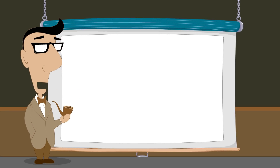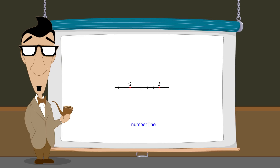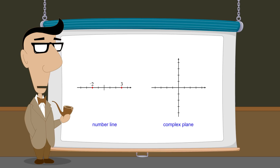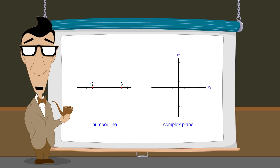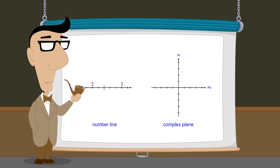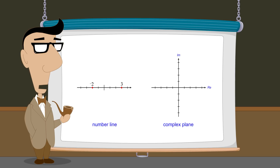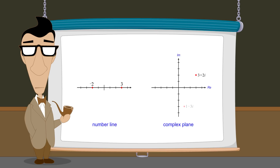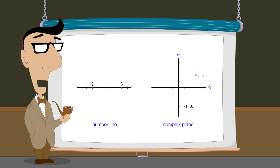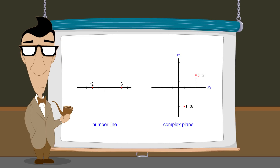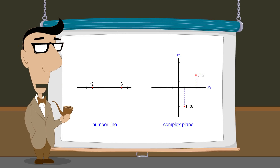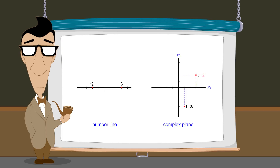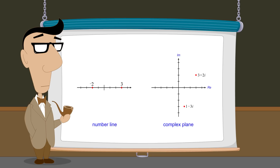In the previous lecture we saw that just as real numbers can be graphically represented as points on a one-dimensional number line, a two-dimensional plane is used to represent complex numbers. This plane is defined by two perpendicular axes: the imaginary axis and the real axis, and complex numbers are represented as points on this complex plane. For example, the complex numbers 3 plus 2i and 1 minus 3i can be represented as dots whose horizontal positions are determined by the value of their real components, 3 and 1, and whose vertical positions are determined by the value of their imaginary components, 2i and negative 3i.